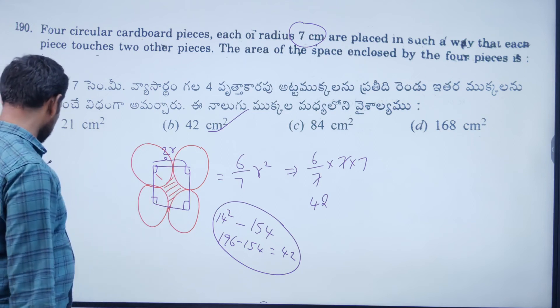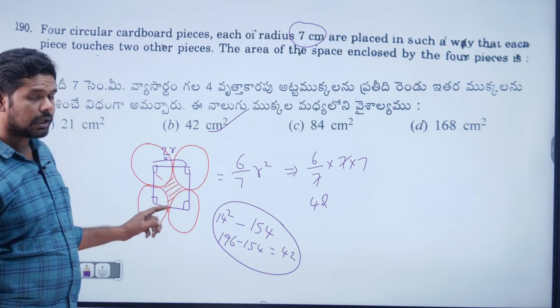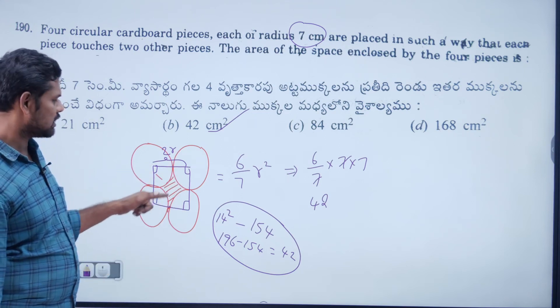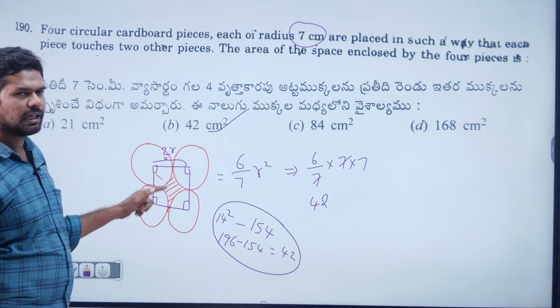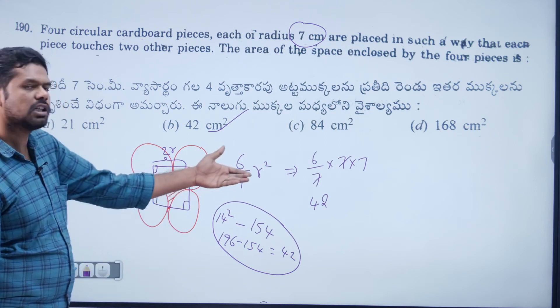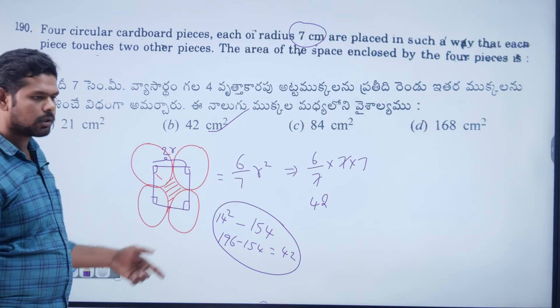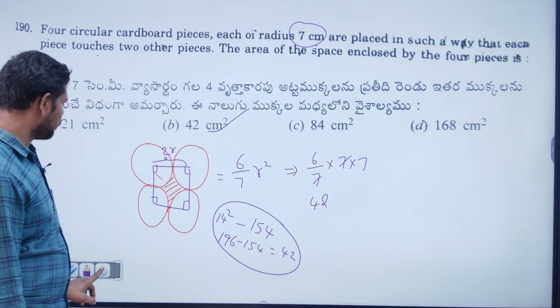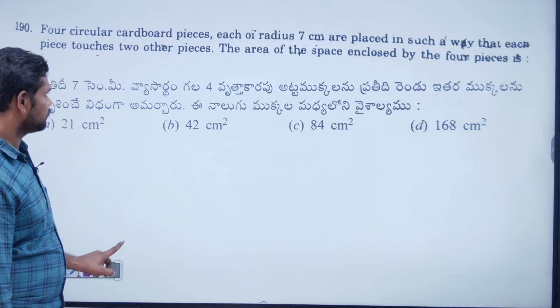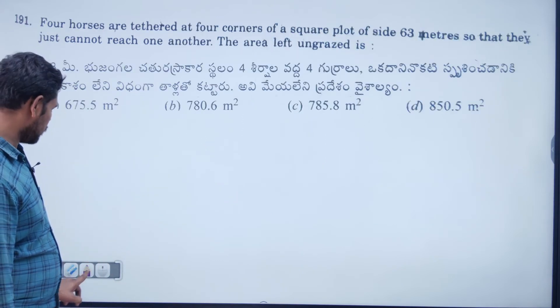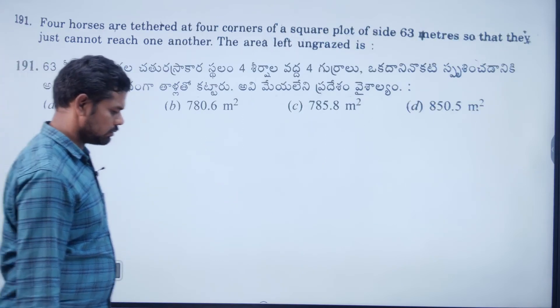Every time, instead of analyzing square minus circle each time, directly use the formula 6/7 × r² to get the answer quickly.